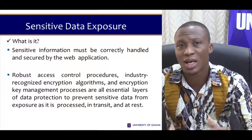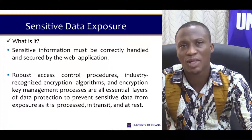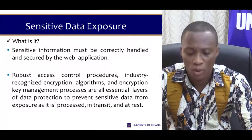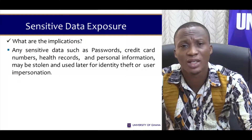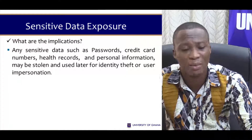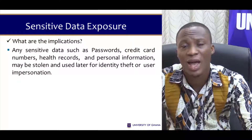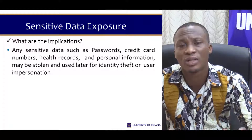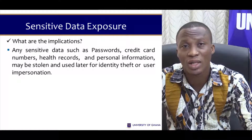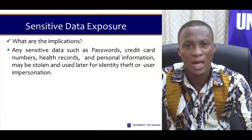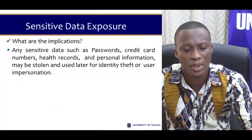This can happen when data is in transit or even at rest. At rest means the data is stored locally on the user's PC. Any sensitive data such as passwords, credit card numbers, health records, and personal information — once an attacker gets hold of this data, the attacker can do anything they please, and that's where impersonation and identity theft come in.